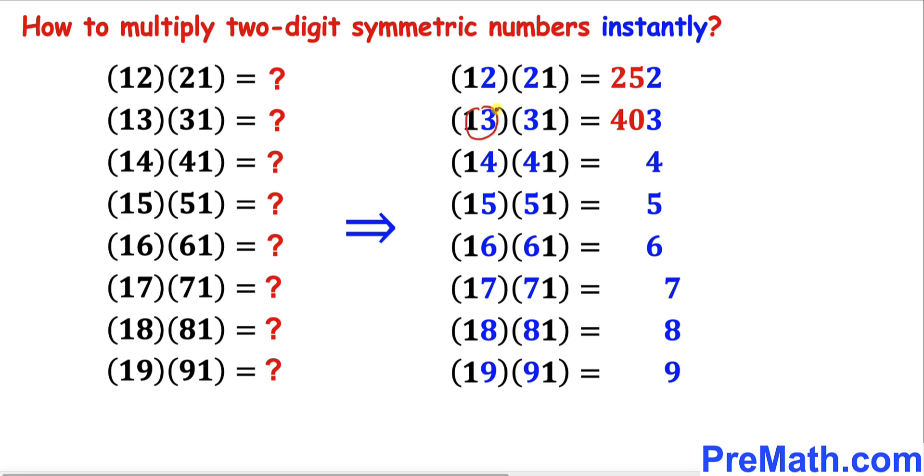Likewise, the next number: 14 times 4 is 56, plus this 1 we're going to add, so 56 plus 1 is going to give us 57.